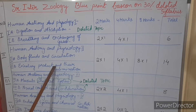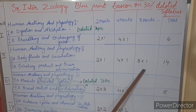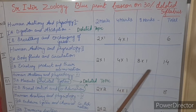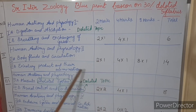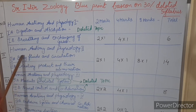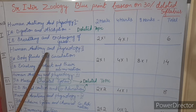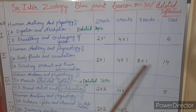We will also get one four-mark question and one eight-mark question from Unit 2. These questions may come from either 2A — Body Fluids and Circulation — or 2B — Excretory Products. So the total marks from this second unit are 14 marks.